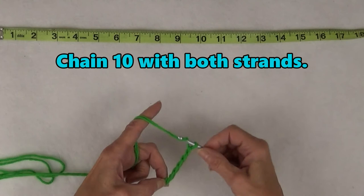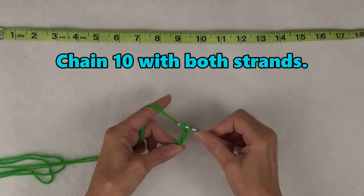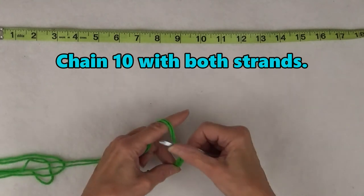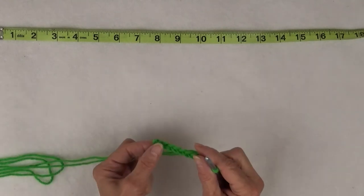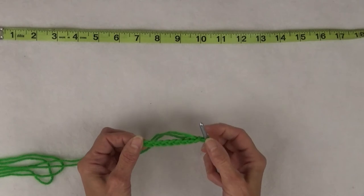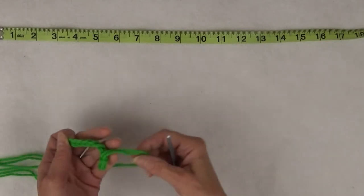Now, tie a slipknot and chain 10 using both the feeder and the long tail. Using your fingers as markers, hold the end with the slipknot with one hand and the two strands of yarn with the other, about an inch from the last chain.